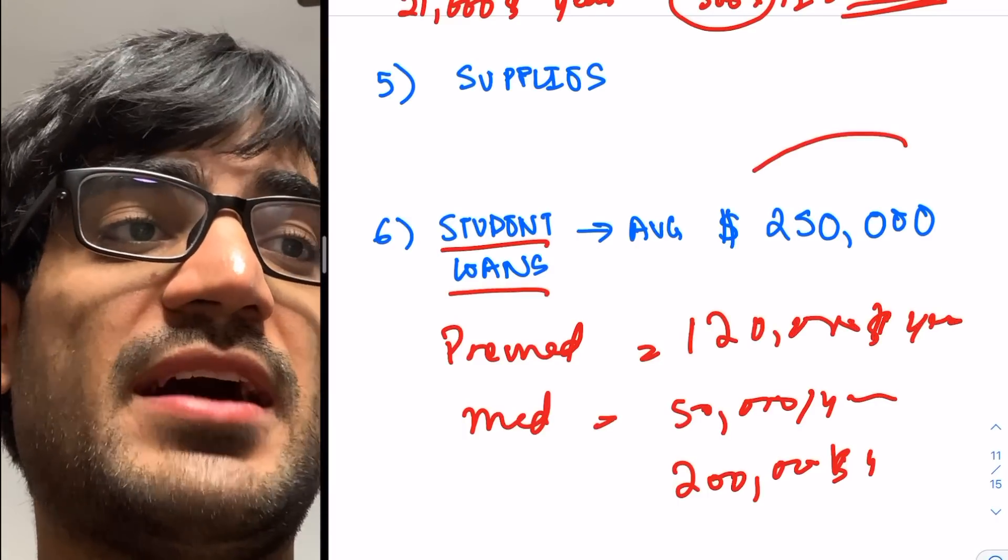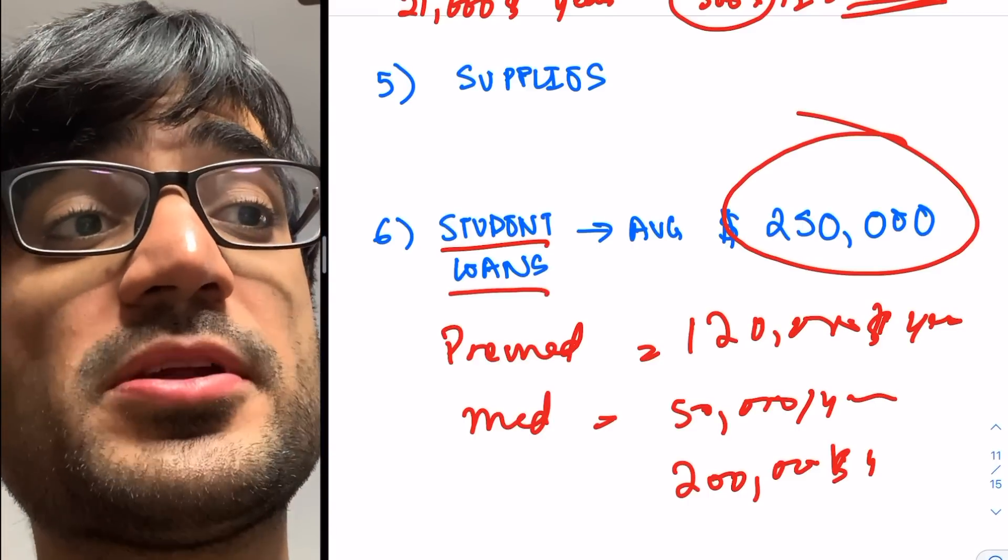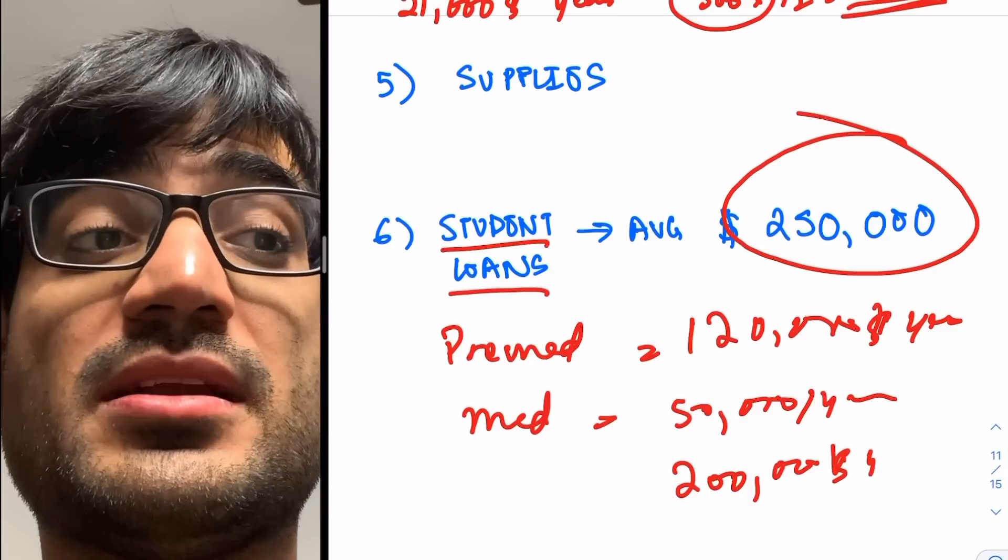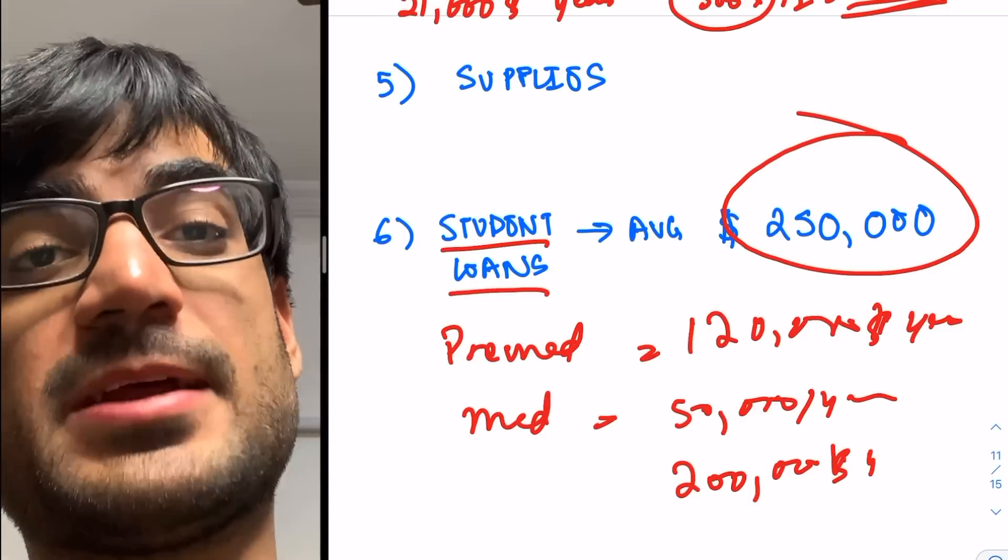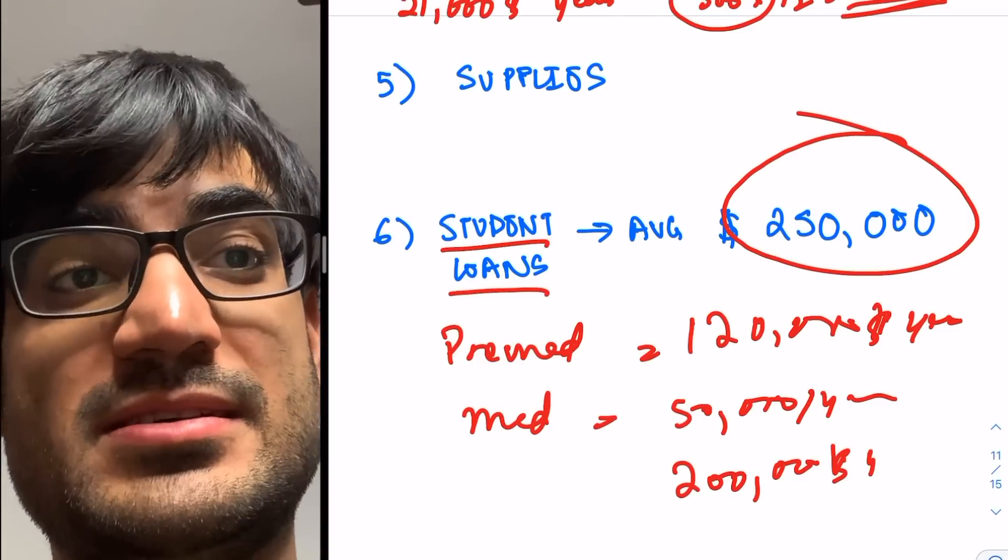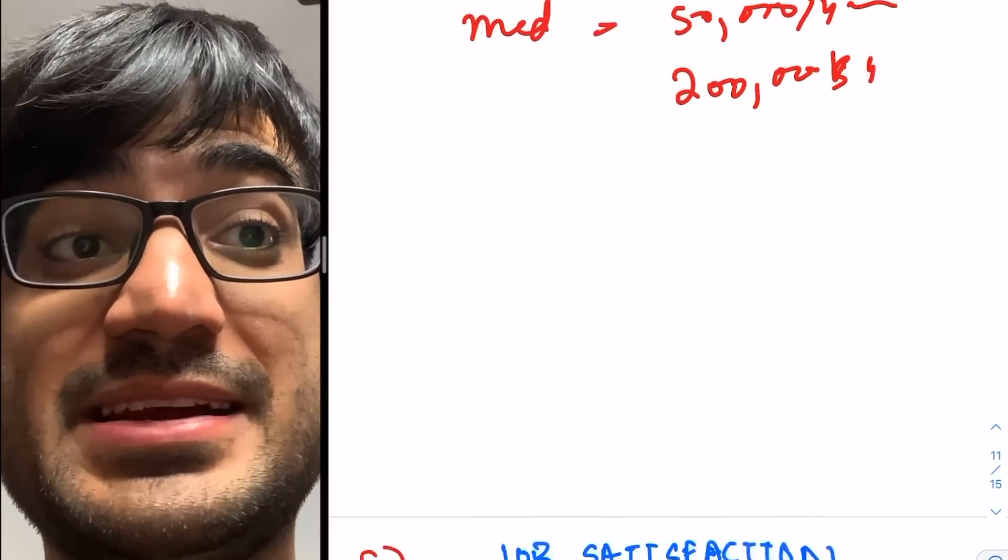But averagely, they have this debt of about $250,000. So residency salary for them, they have to pay that debt. They have to pay that loan. Otherwise, the interest would keep increasing. So for them, this is a factor that they need to consider.